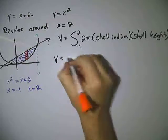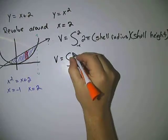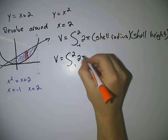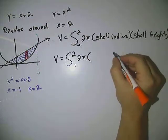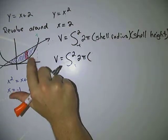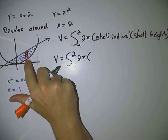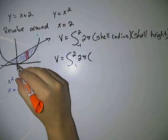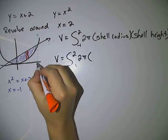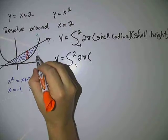So volume is going to be the integral from negative 1 to 2, 2 pi. Our shell radius is going to be the distance between the line of rotation and this rectangle. Now this entire distance here is 2.